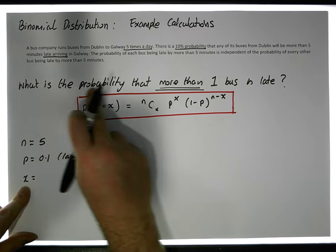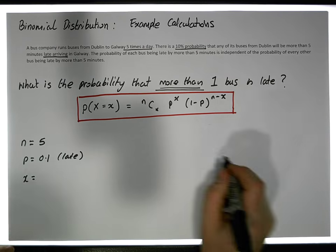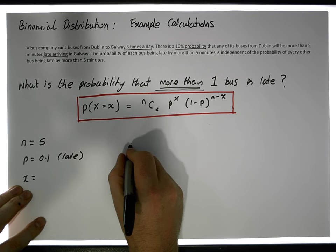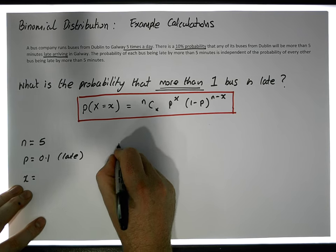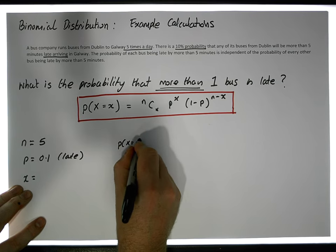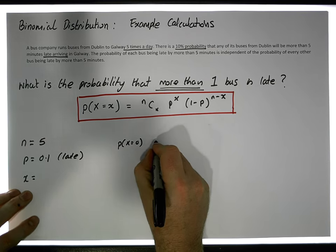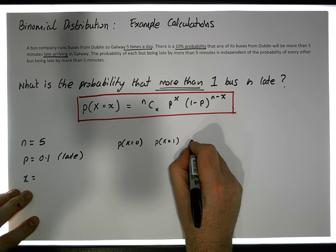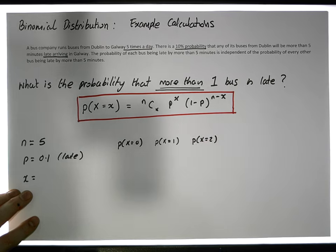But in this case, what we're interested in is: what is the probability that more than one bus will be late? So let's work out what could happen. We could have X = 0 — what's the probability that no buses are late? We could calculate the probability that one bus is late, the probability that two buses are late,